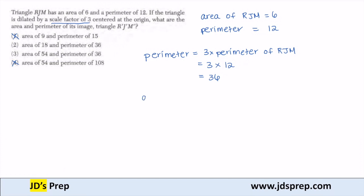Now we need to find the area. So the area is going to be equal to the scale factor squared, because remember, if it's a scale factor, when you're dealing with area, you have to square that. So it's the scale factor squared times the area of the original RJM.